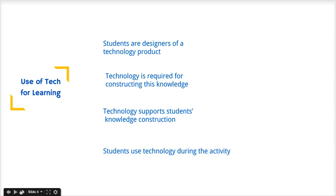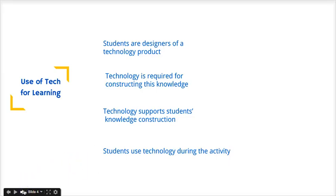Looking more closely at the use of technology for learning, this involves students using technology for learning — the key word being 'for' — when they directly complete all or part of their activity using technology. The key point here is that the students can control the technology themselves. The students are using the technology, not the teacher. It's student-centered. Many of the technology tools we're going to look at today offer this kind of experience where the students are in control of the technology.